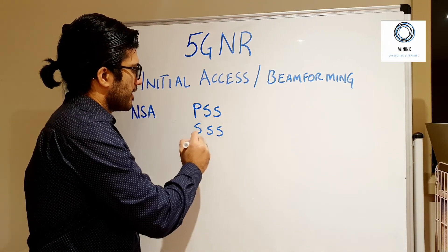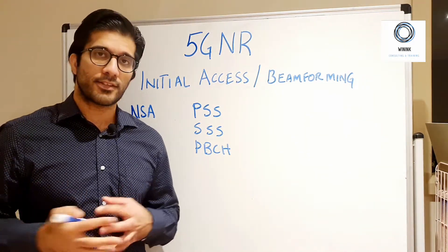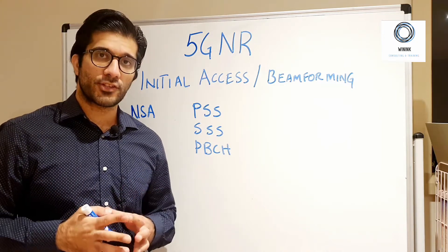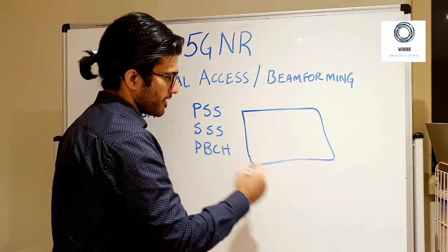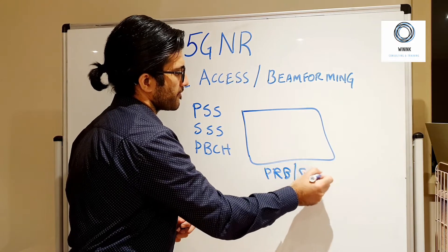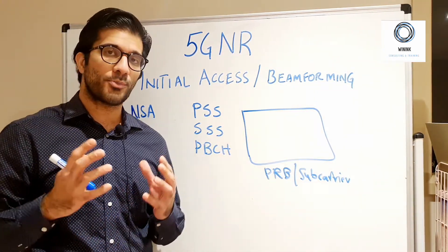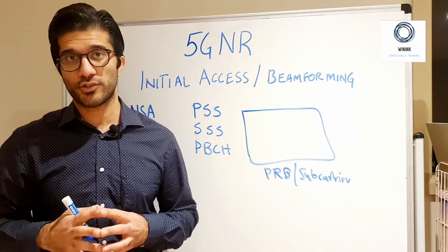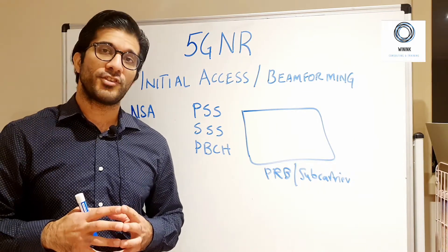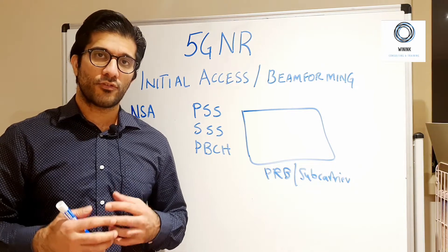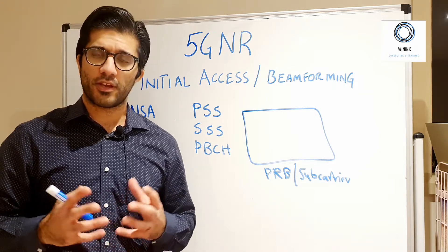The first thing that the UE needs are three things: PSS, SSS, and PBCH. PSS is your Primary Synchronization Signal, SSS is your Secondary Synchronization Signal, and PBCH is your Physical Broadcast Channel. These are the only always-on signals or always-on channels in 5G NR, so they will always be transmitted from the base station so that the UE can access the 5G network.